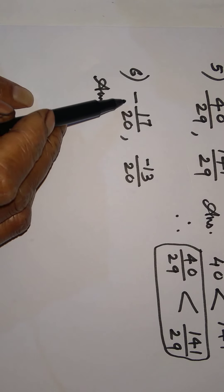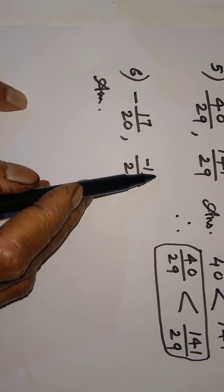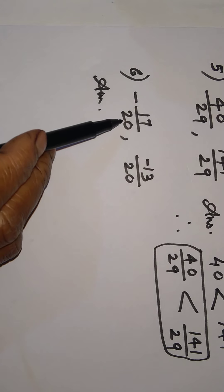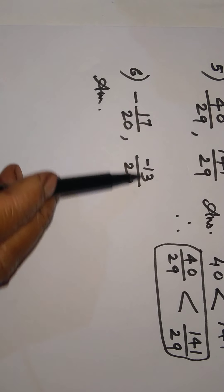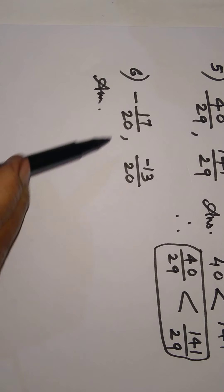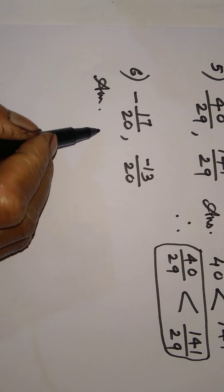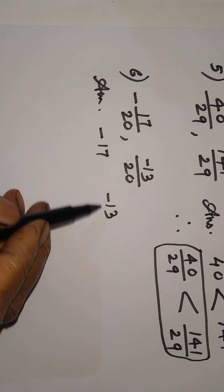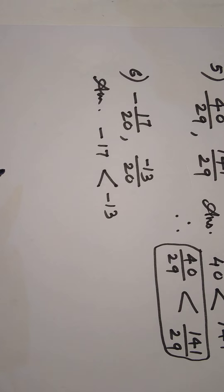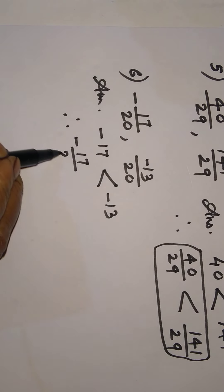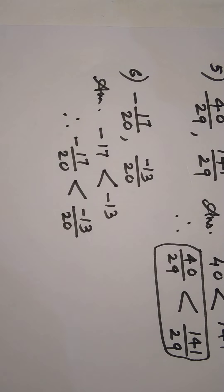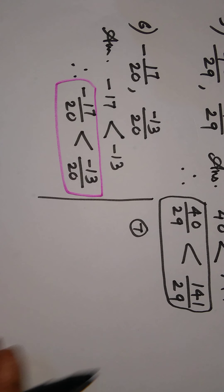Never put the negative sign in the denominator. Both numbers given are negative and both have the same denominator, so we only compare the numerators. We have minus 17 and minus 13. Among these, minus 13 is bigger because in negatives, the smaller real value is the bigger number. So minus 17 upon 20 is less than minus 13 upon 20.